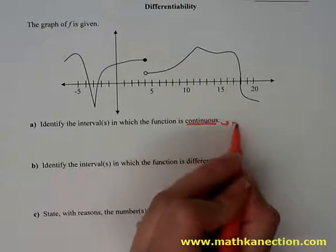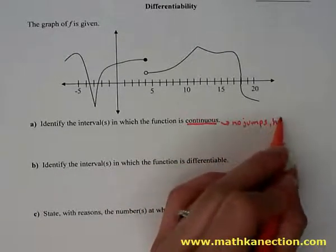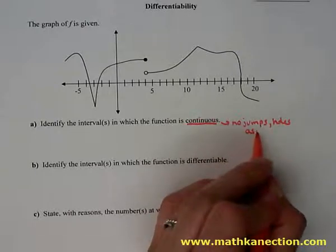The first thing we're going to look at is where the function is continuous. Looking at that graph of f, we're looking for no jumps in the graph, no holes, and no asymptotes.